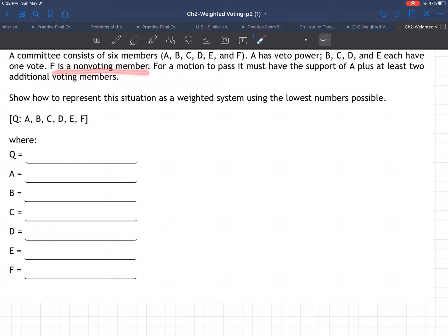F is a non-voting member. For a motion to pass, it must have the support of A plus at least two additional voting members. That's the key phrase - got to have A plus two additional voting members. We notice that F is a nobody. Let's just cross out F because F is a non-voting member.